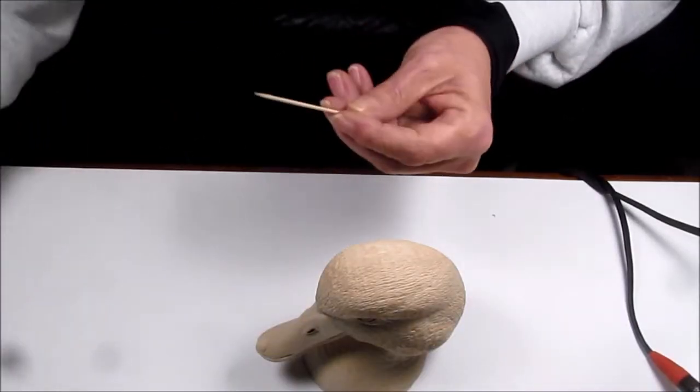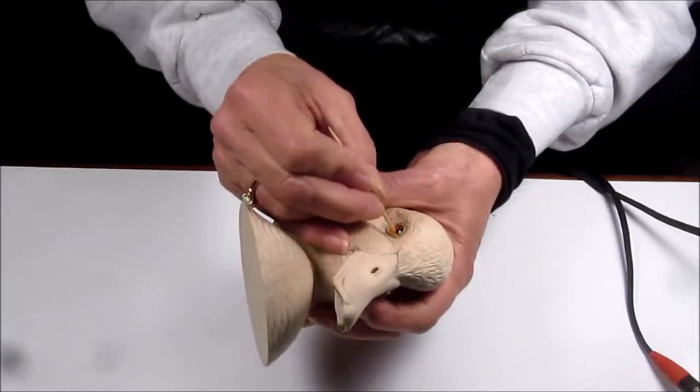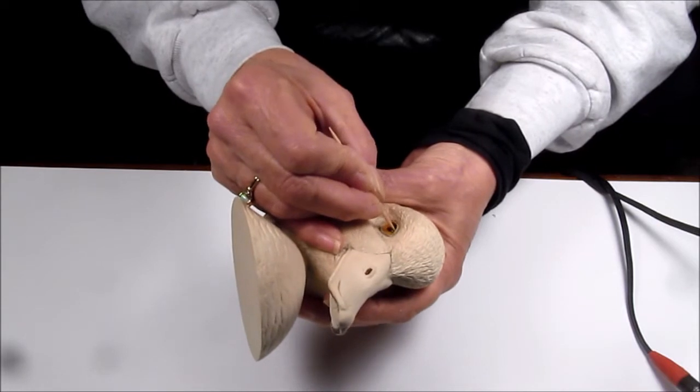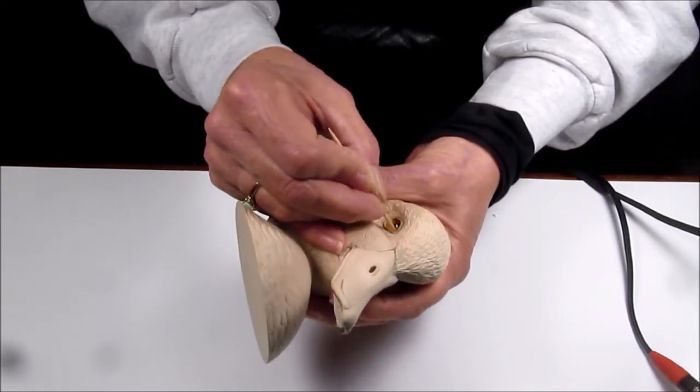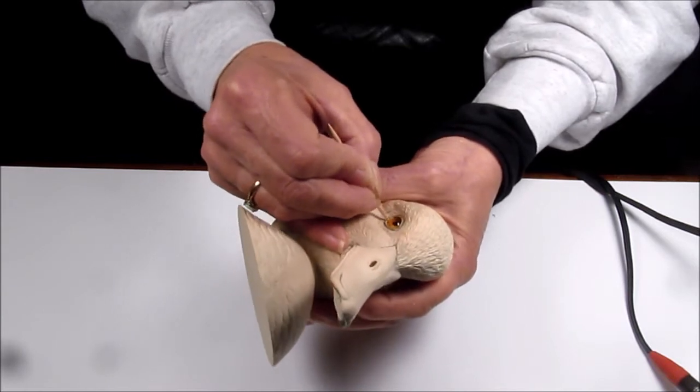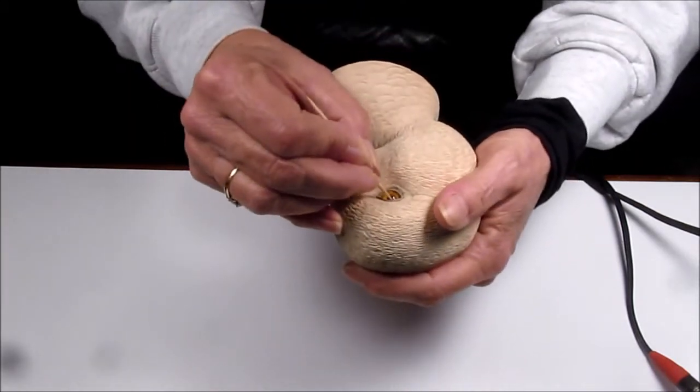I always use a toothpick when I clean my glass eyes. A little bit of saliva to get it wet. It cleans out all the little dust particles and smoothens everything off.